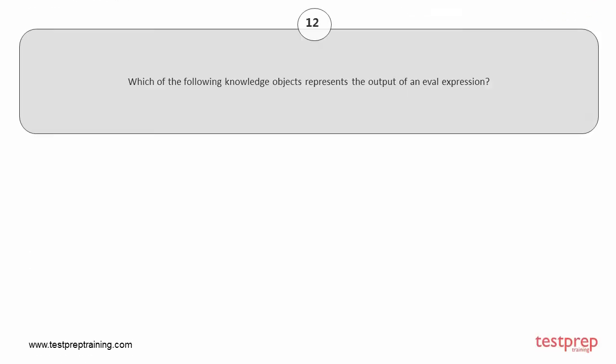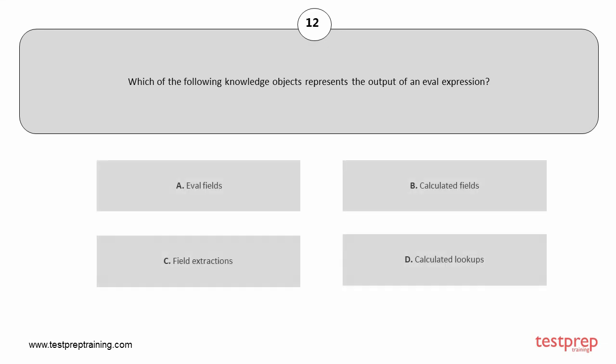Question number 12. Which of the following knowledge objects represents the output of an eval expression? Your options are: A. Eval fields. B. Calculated fields. C. Field extractions. D. Calculated lookups.